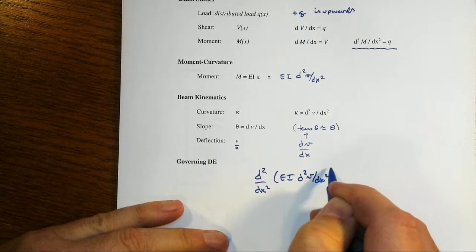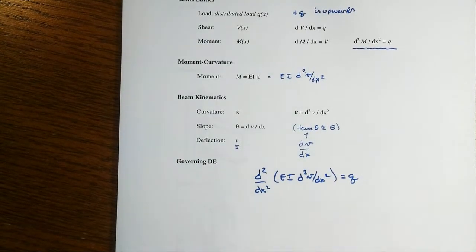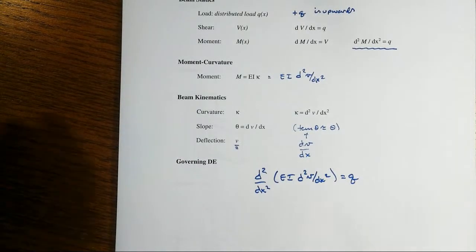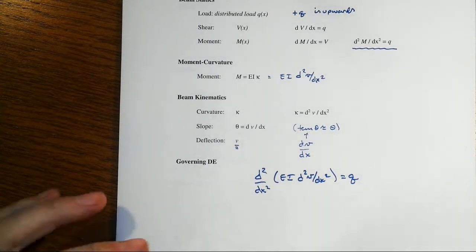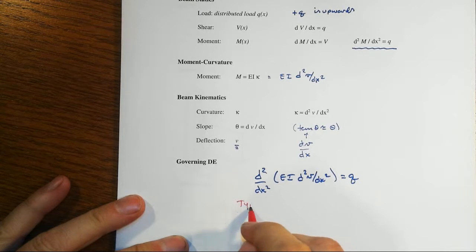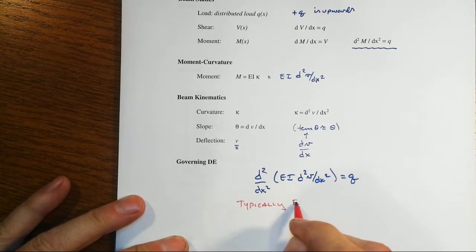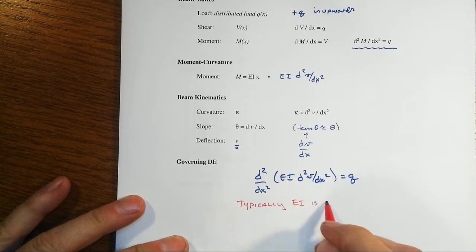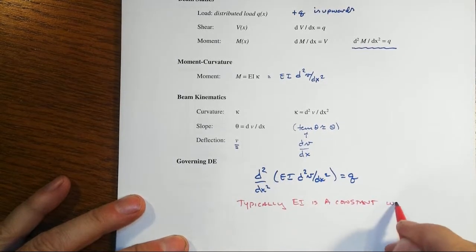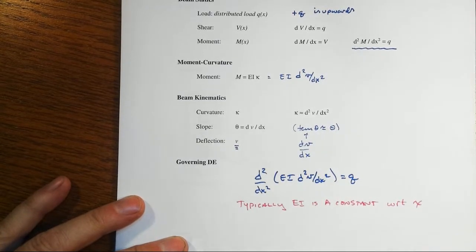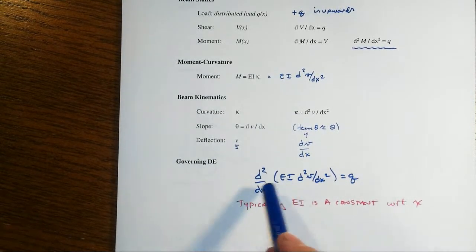And this is a big, long mouthful. And if you are a typical beam out there in real life, then usually, but not always, we're just being sometimes an exception, but typically EI is a constant in our models with respect to x. And when that is the case, of course, EI pops right on out.